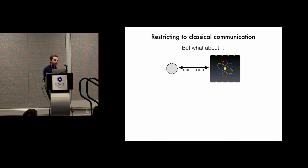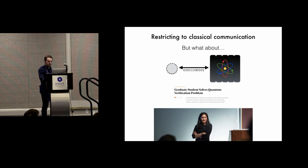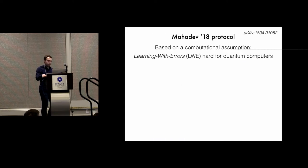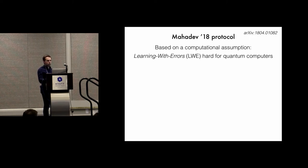But the elephant in the room is: what about when the verifier is completely classical and we have a single quantum computer? This was solved by Mahadev last year, and her protocol is based on a cryptographic assumption. We assume that the prover is only running in polynomial time — it's a polynomial-time quantum computer — and we assume that the problem known as learning with errors is intractable for polynomial-time quantum algorithms.